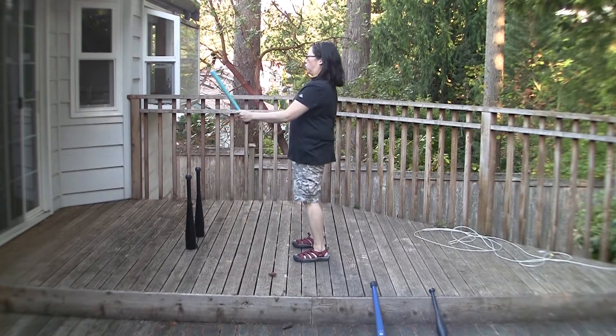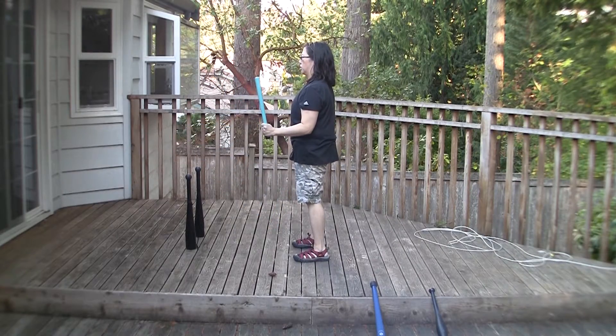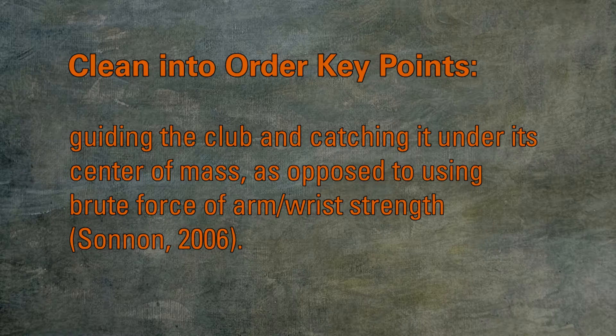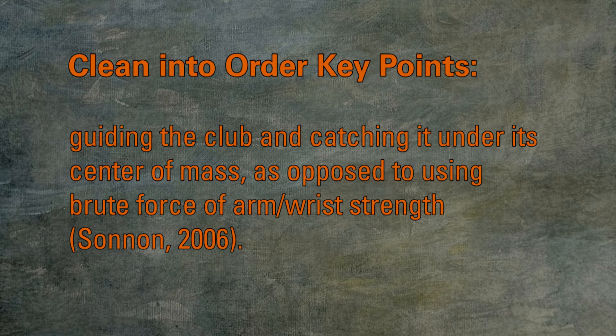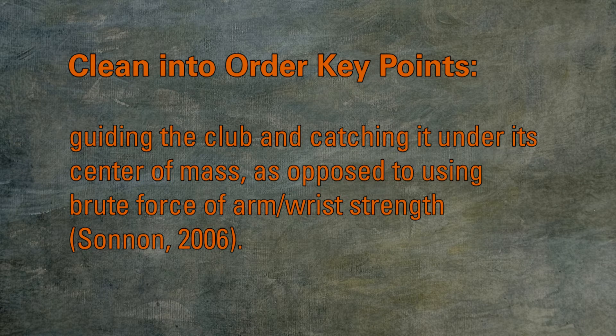Imagine coupled center of masses. After the front swing, one breaks the club's momentum and catches the club into order position. This is the clean portion of the swipe.